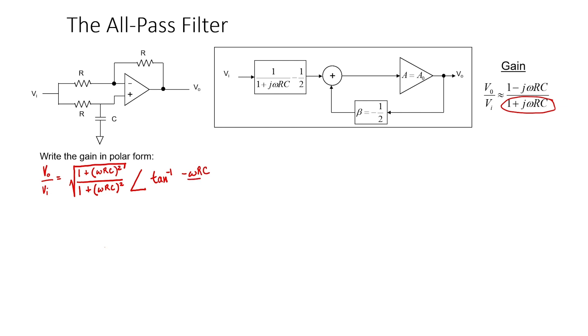Now for the phase angles, we take numerator minus denominator. The magnitude of the gain is just 1. Because the magnitude of the gain is always 1, this is called an all-pass filter, meaning it passes all the frequencies that it's presented with, but the phase is frequency dependent.